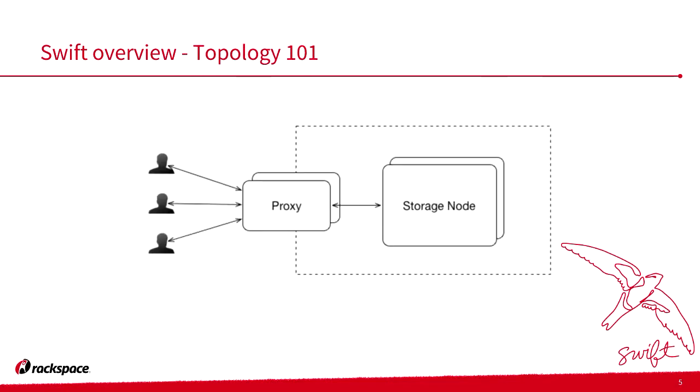Very briefly about topology — this helps define the problem description. This is a very million-mile view of a Swift cluster. On your left we've got our users, our clients — these could be apps, other OpenStack services, anything. We've got our proxy layer, which is like the gateway into the Swift cluster, and then we've got a bunch of storage nodes. If you've got a workload with huge connections, you can just scale the proxy layer, or obviously scale the storage layers as needed. So it's really flexible.